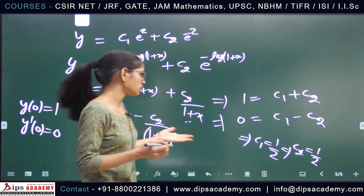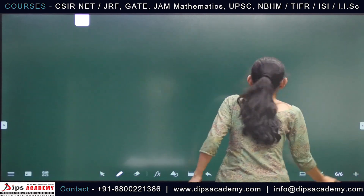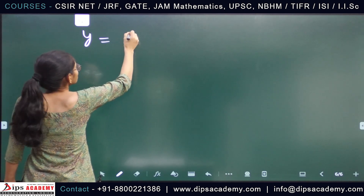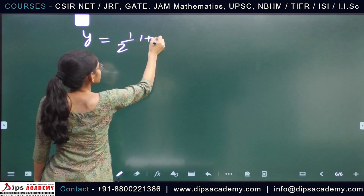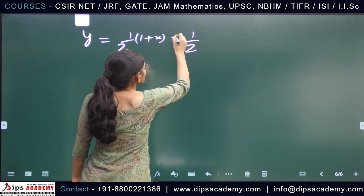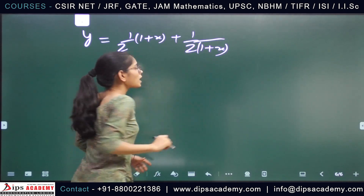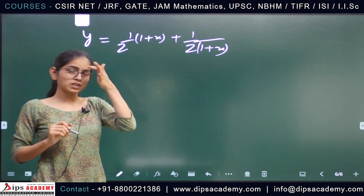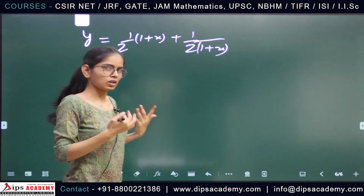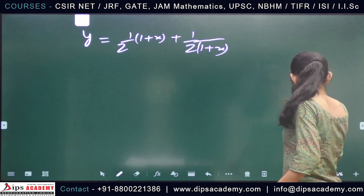With c₁ = c₂ = 1/2, our solution is y = (1/2)(1+x) + 1/(2(1+x)). This is the solution of the given differential equation. Now we will solve the options one by one based on this solution.